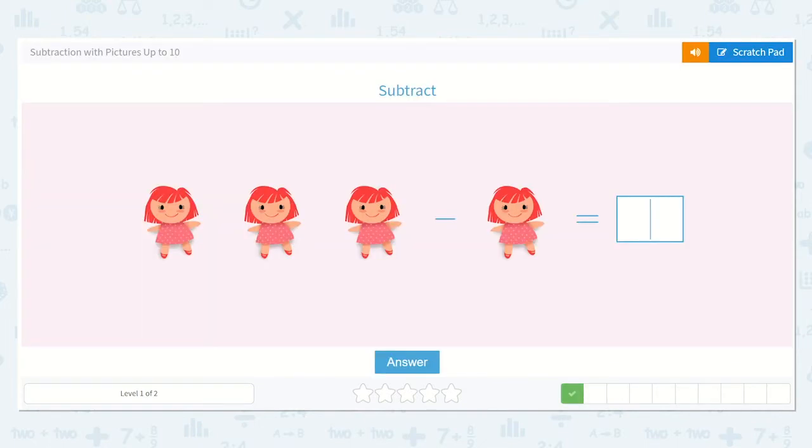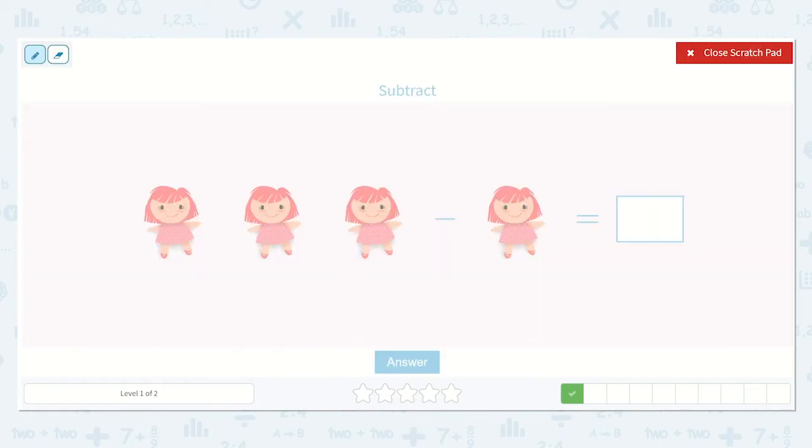Alright, now I see we have 3 dolls. 1, 2, 3. And they want us to subtract, or take away, 1. So, if we know that we have 3, and we want to take away 1, let's see how many that will be.